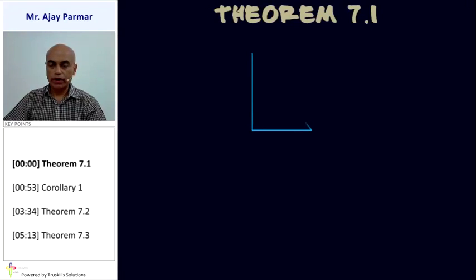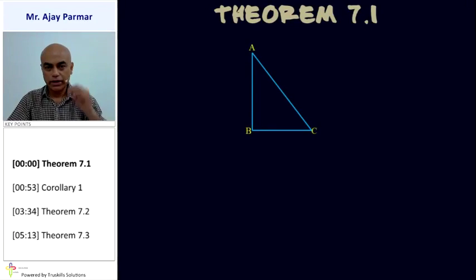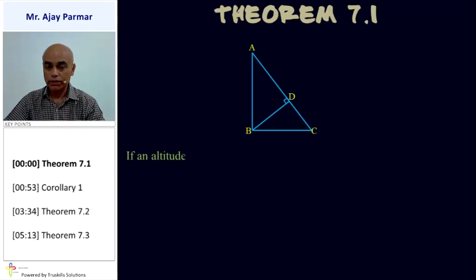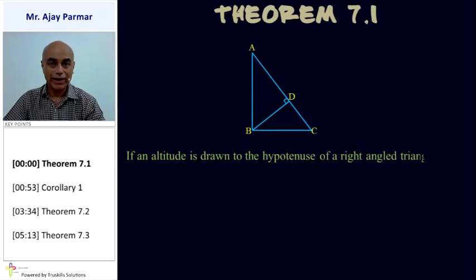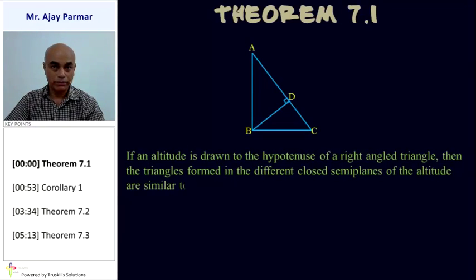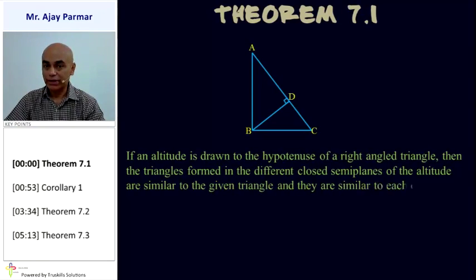Theorem 7.1. We are given that in triangle ABC, angle B is a right angle and line segment BD is given to be an altitude, so two different triangles are being formed. If an altitude is drawn on the hypotenuse of a right-angled triangle, then the two triangles so formed in the two different closed semi-planes of that altitude are similar to the original triangle ABC and also similar to each other.